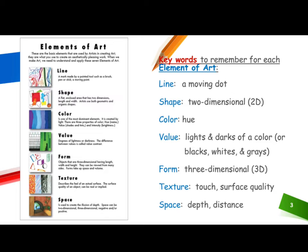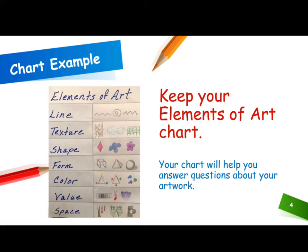Key words to remember for each art element: line — a moving dot; shape — two-dimensional (2D); hue — color; value — lights and darks of color, or blacks, whites, and grays; form — three-dimensional (3D); texture — touch, surface quality; space — depth and distance. Be sure to keep your elements of art chart — your chart will help you answer questions about your artwork.